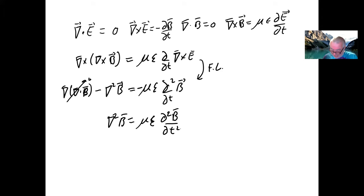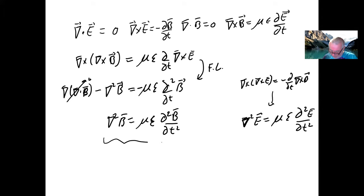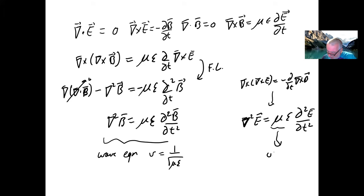Similarly, if I take the curl of the curl of E, that equals minus d/dT of the curl of B. Going through the same exercise, I end up with grad squared E equals mu epsilon d²E/dT². And so what we have here is a wave equation, where the wave speed V equals 1 over the square root of mu epsilon.